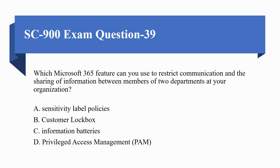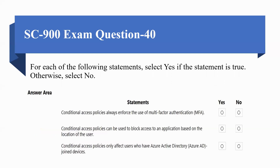Next question: which Microsoft 365 feature can you use to restrict communication and sharing of information between members of two departments at your organization? Options are: A) Sensitivity label policy, B) Customer Lockbox, C) Information Barriers, D) Privileged Access Management. The correct option is C, Information Barriers.